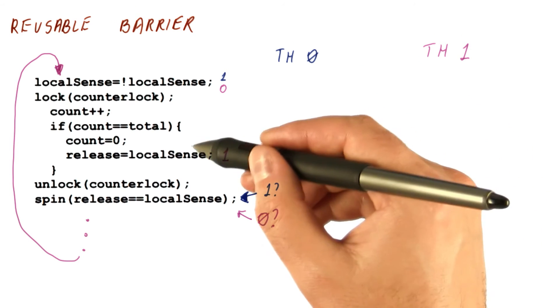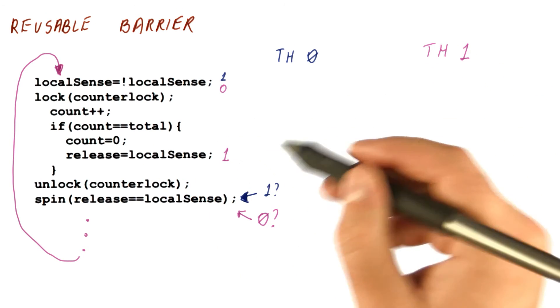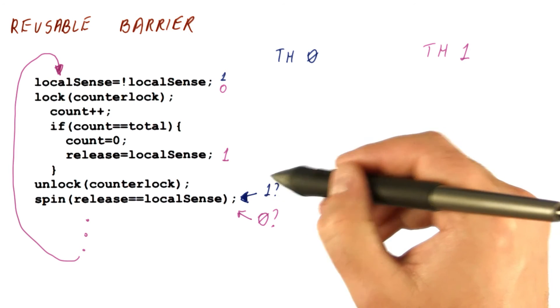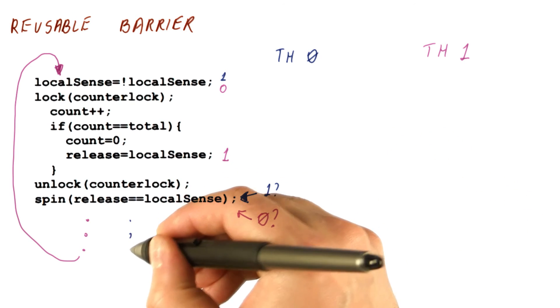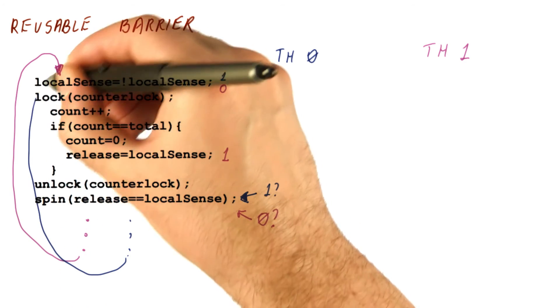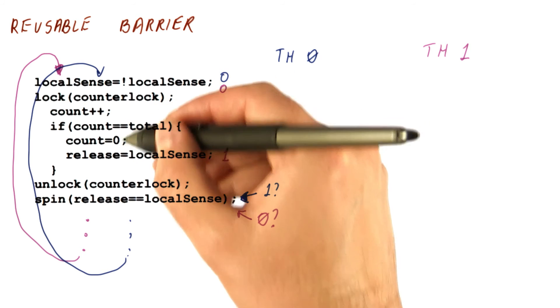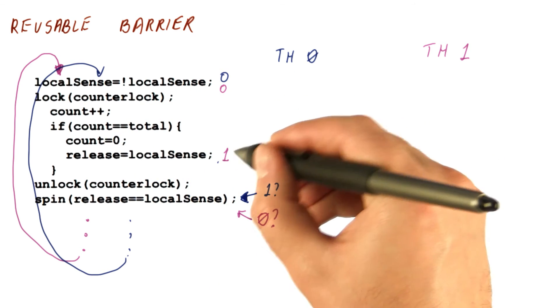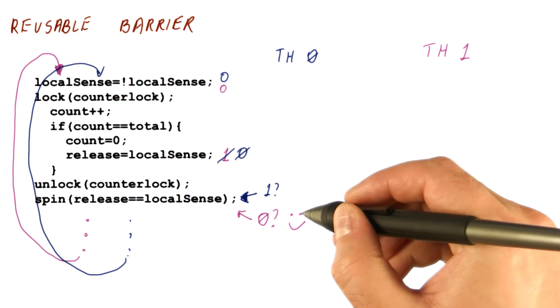Note that the release is still the same as thread one left it in the first instance, so eventually thread zero will check and see that the release has become one, at which point it will leave. Eventually it's going to come here, change its local sense to zero, increment the count, see that it's two, reset the count, set the release to zero this time, and now thread one will be released.